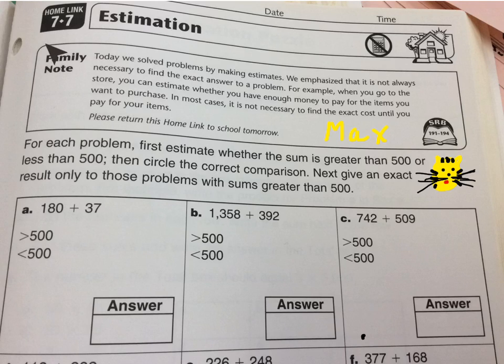This is some brief help with Homelink 7.7 on estimation for 3rd grade everyday math. This is both estimation and addition. Students from Seisen, if you'd like to see a picture of Max, please wait until the end. This is a little one, but there's another one at the end too.